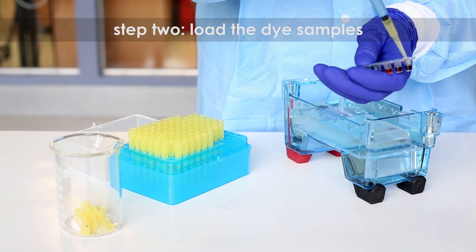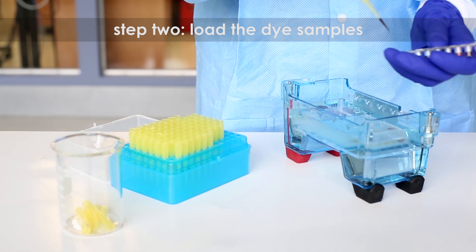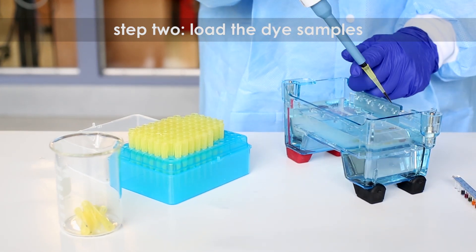Step two: load 35 to 38 microliters of the dye samples into wells in consecutive order starting with the positive web.